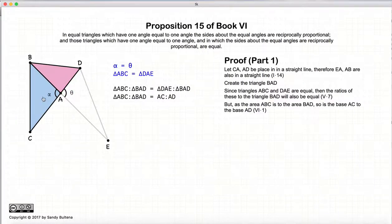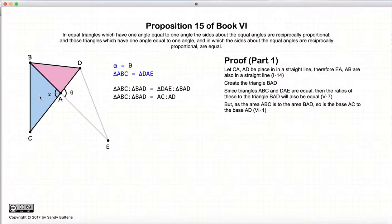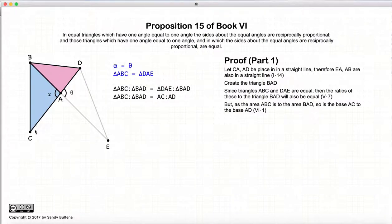So let's look at these two triangles. According to Proposition 1 of Book 6, if you have two triangles that share a common base and a common vertex, the ratio of the area of the two triangles is equal to the ratio of the length of their bases. So in other words, the area of ABC to BAD is equal to the ratio of AC to AD.